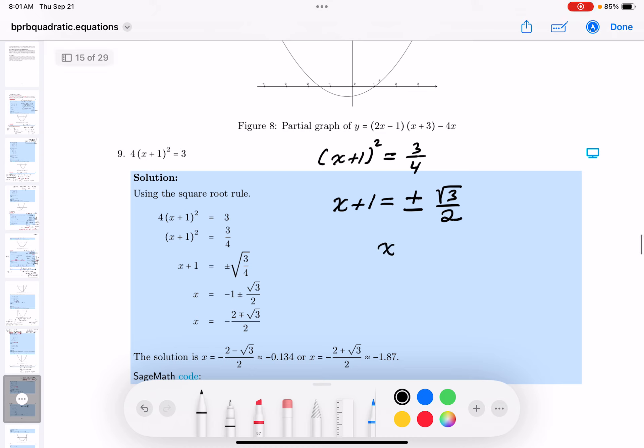So I think I'm there. What do I get? x equals, that would be -1 ± √3/2. By the way, I consider this to be a good answer.